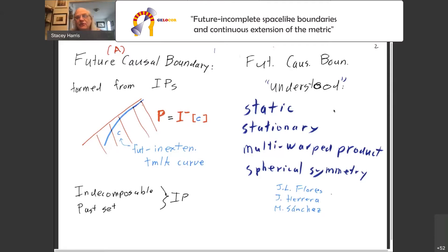Now, the future causal boundary may be said to be somewhat understood in some specific cases in static spacetime, stationary spacetime, multi-warped products, cases of spherical symmetry. Some prominent names in these studies are José Luis Flores, Jonathan Herrera, and Miguel Sanchez.